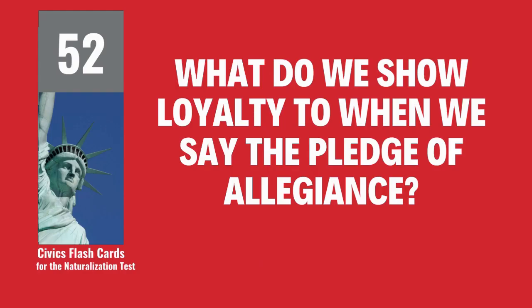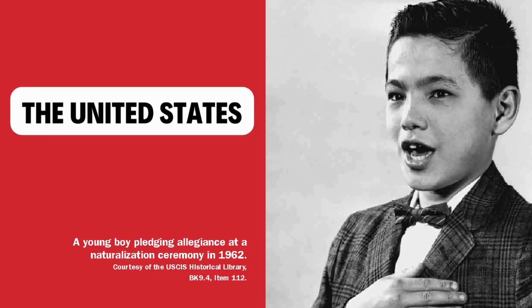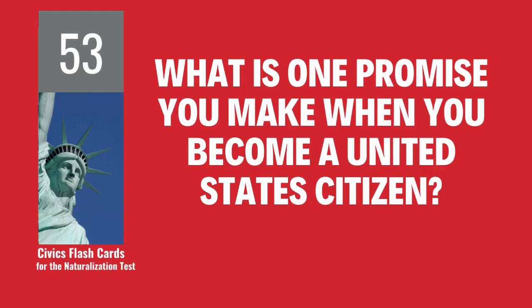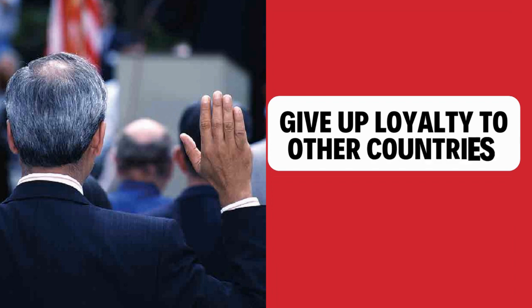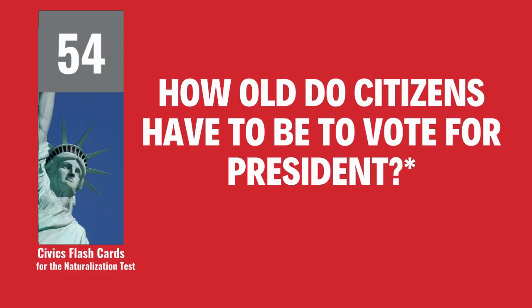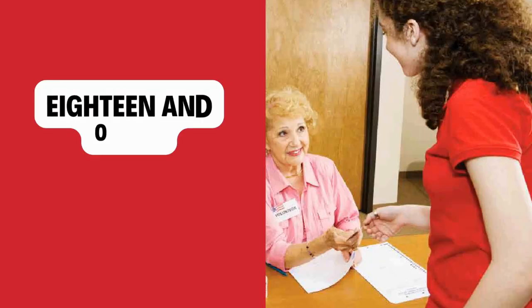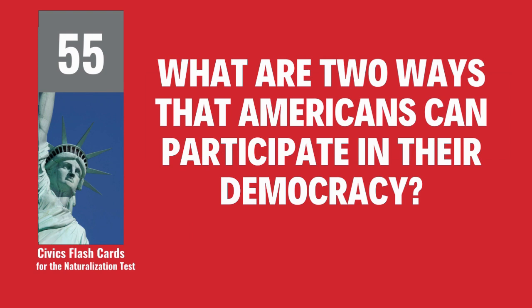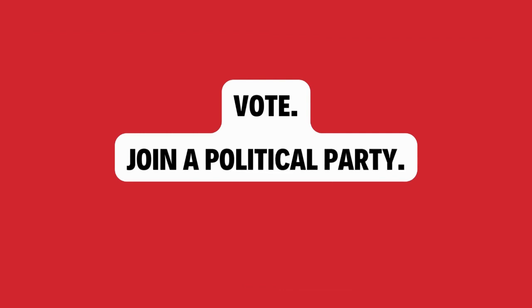What do we show loyalty to when we say the Pledge of Allegiance? The United States. What is one promise you make when you become a United States citizen? Give up loyalty to other countries. What are two ways that Americans can participate in their democracy? Vote. Join a political party.